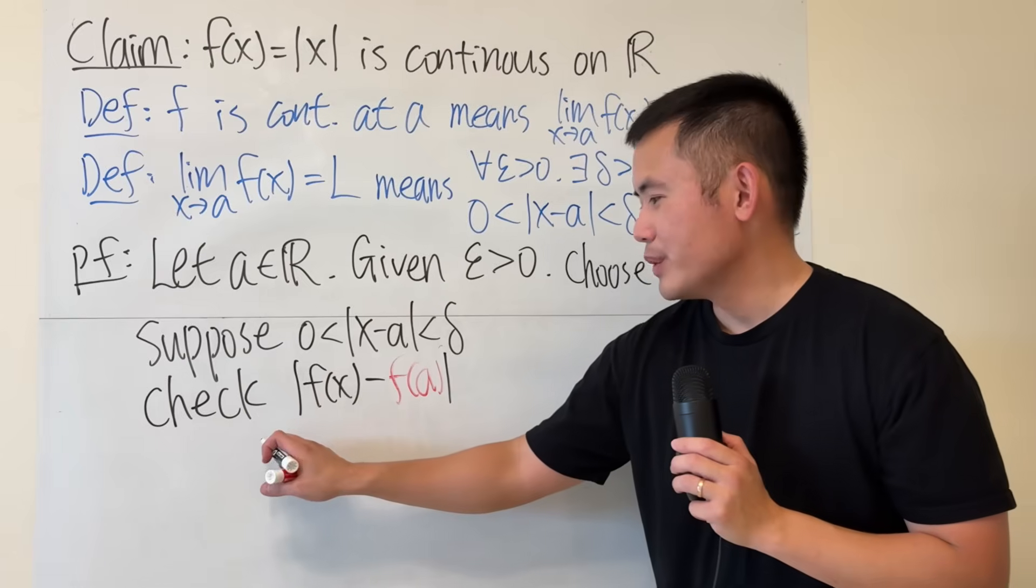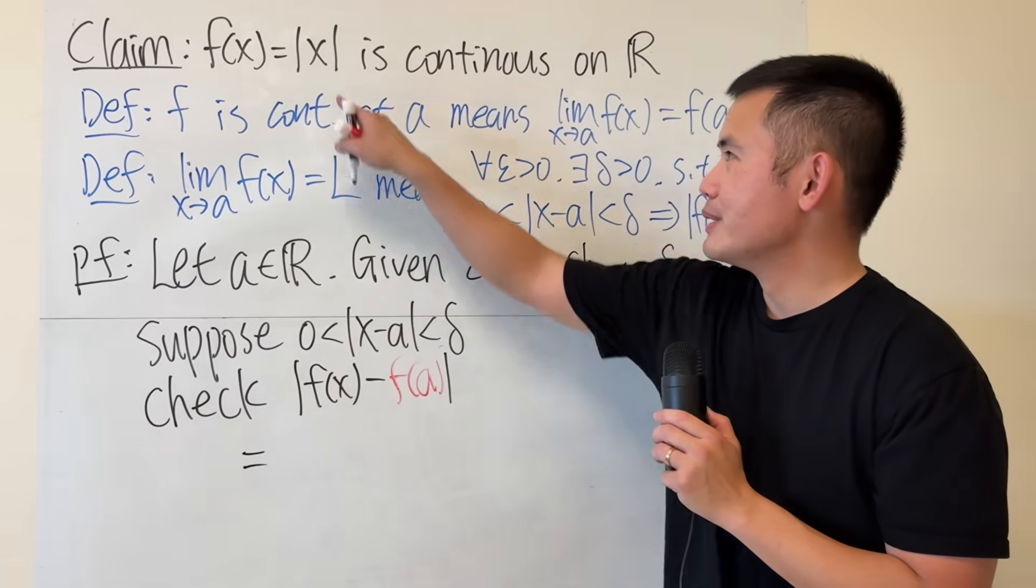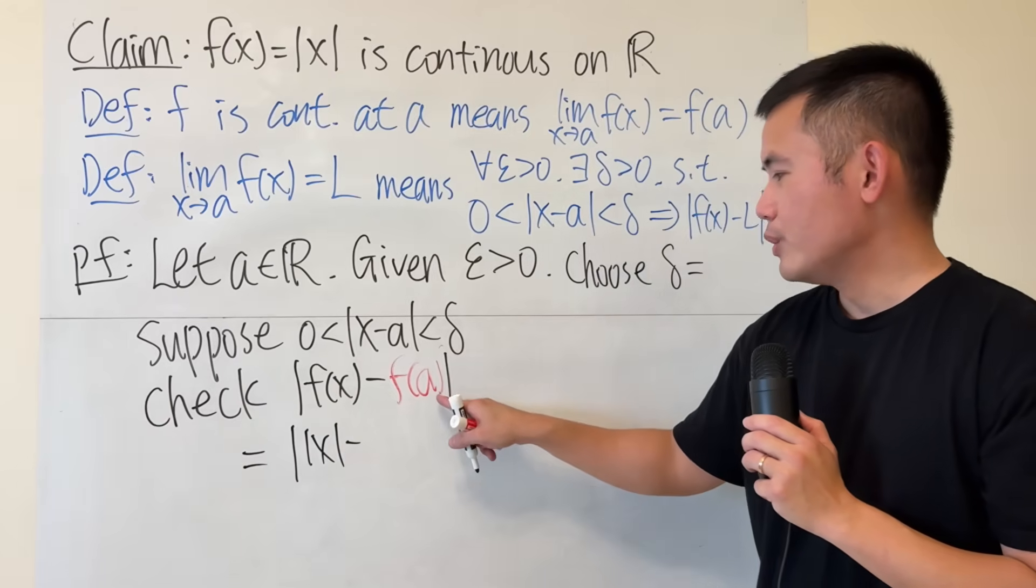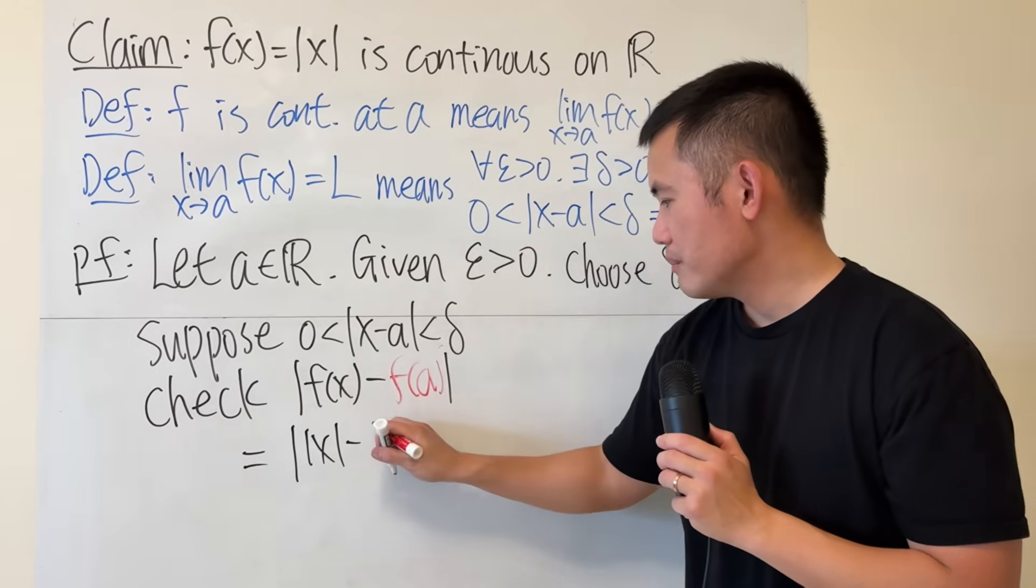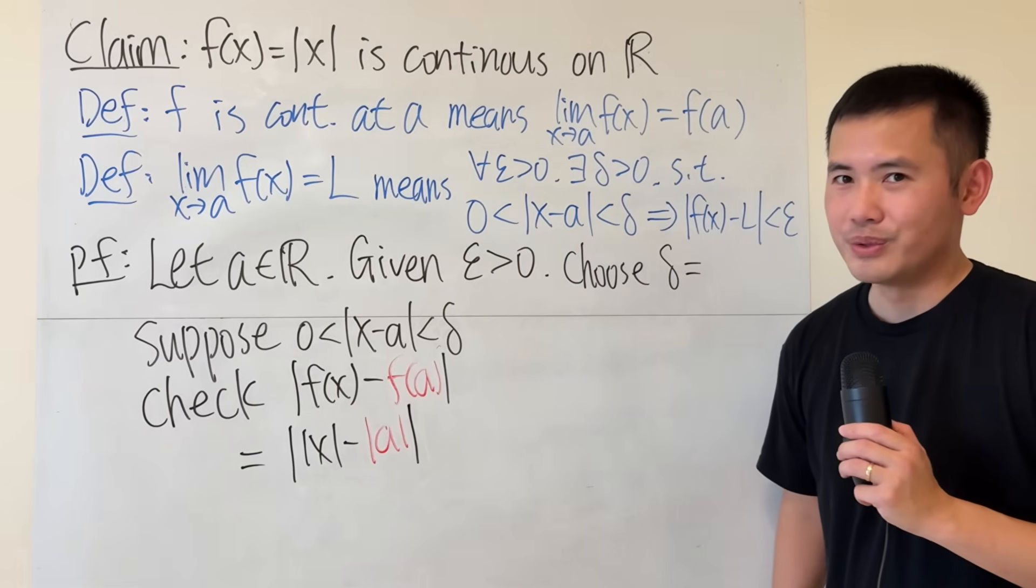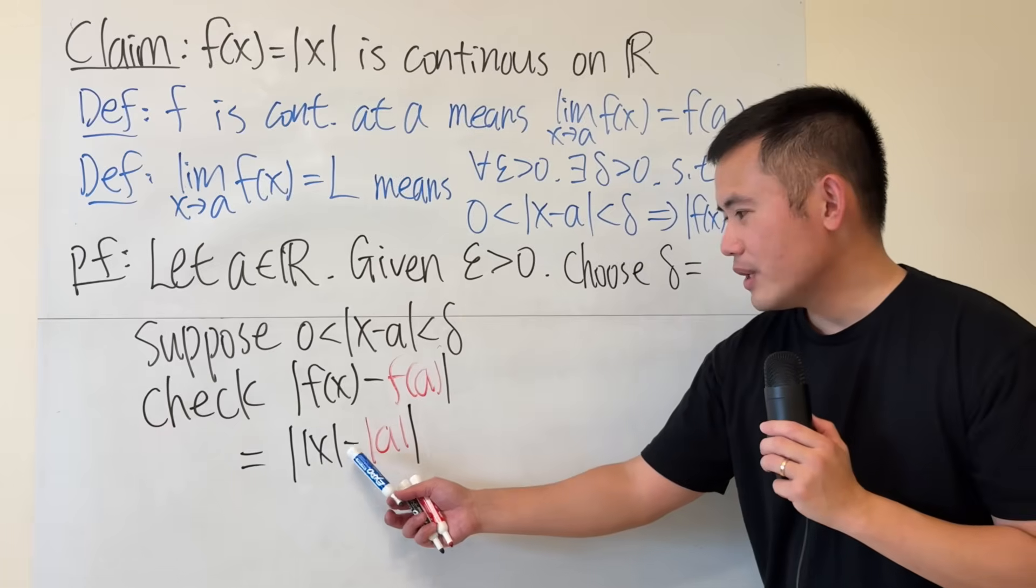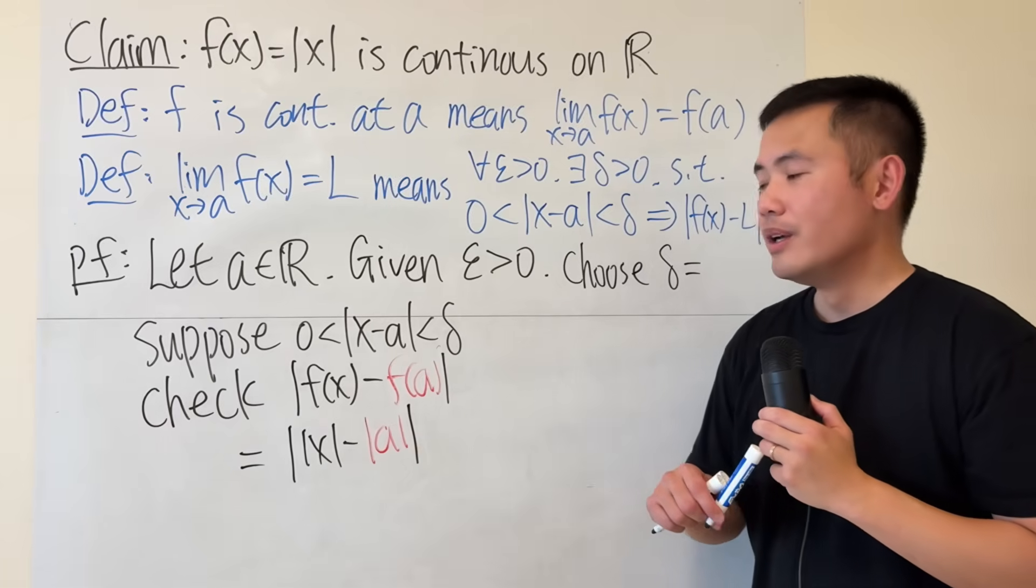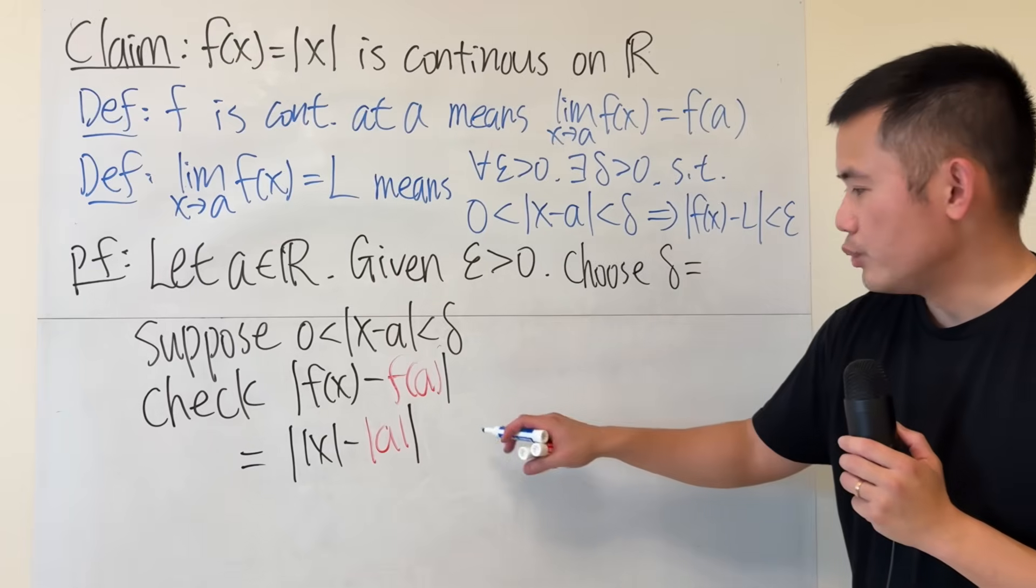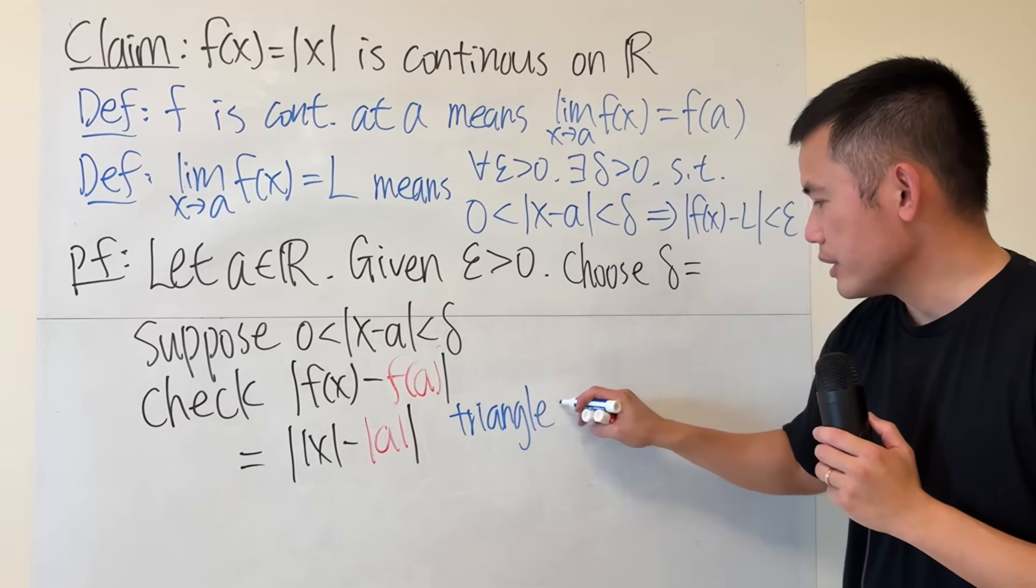Then, we are going to do some algebra. We can't really do too much though. Because f(x), we can just put that down right here. F of a, we just put a in here. So this is what we have. So far, so good. But, what do we do to continue? Notice, this is a difference of two absolute values. Here, we can use the reverse version of the triangle inequality. Let me review that with you guys.